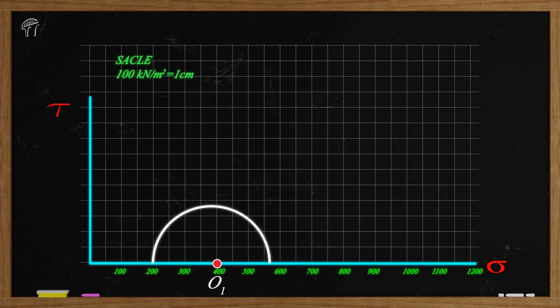Mohr circle is the graphical representation of general state of stress at a point. It is useful in visualizing the relationship between normal and shear stresses on an element. Stress conditions during a triaxial test can be beautifully represented using Mohr circle.